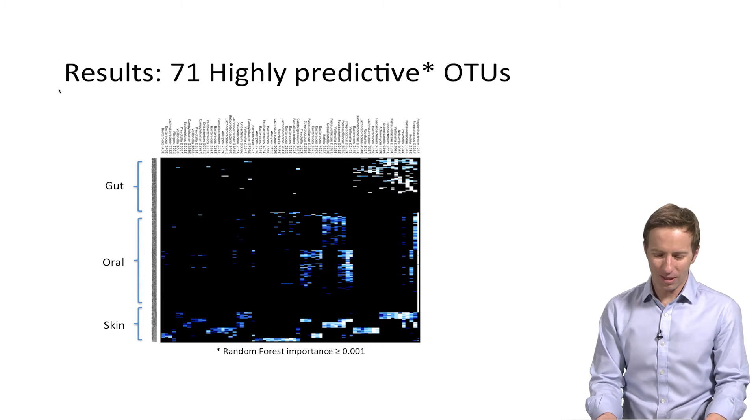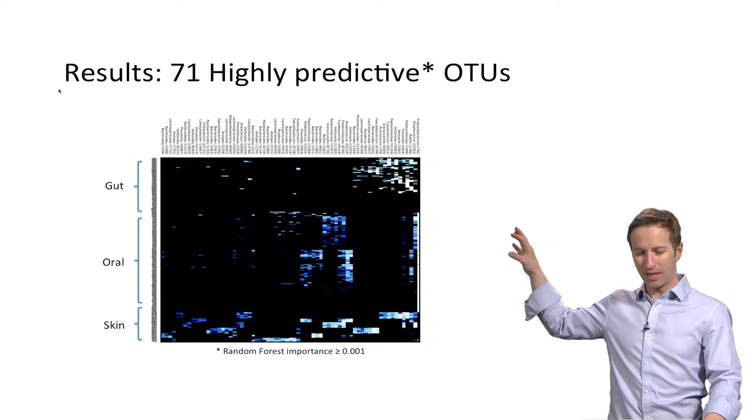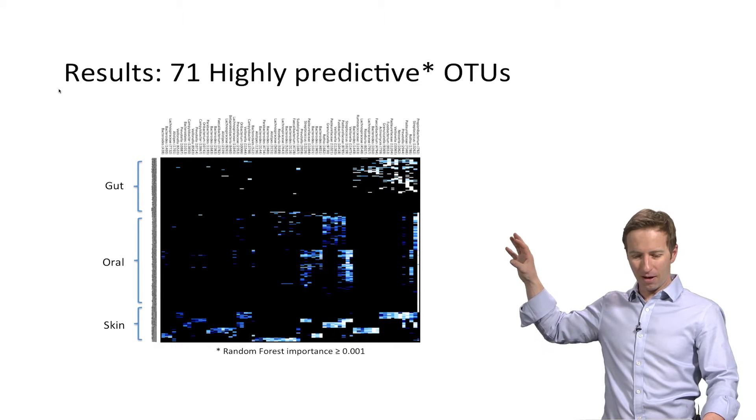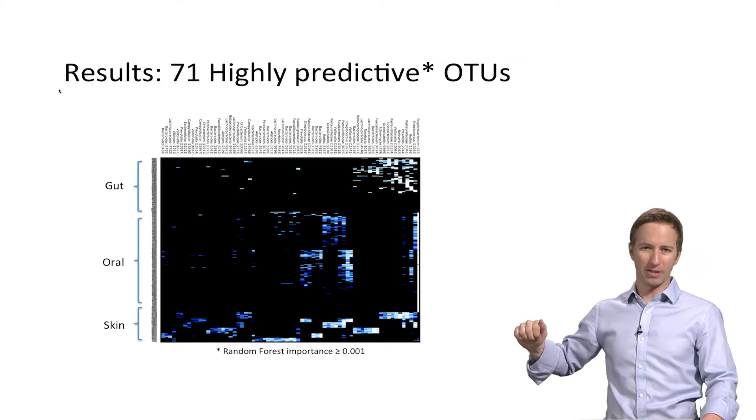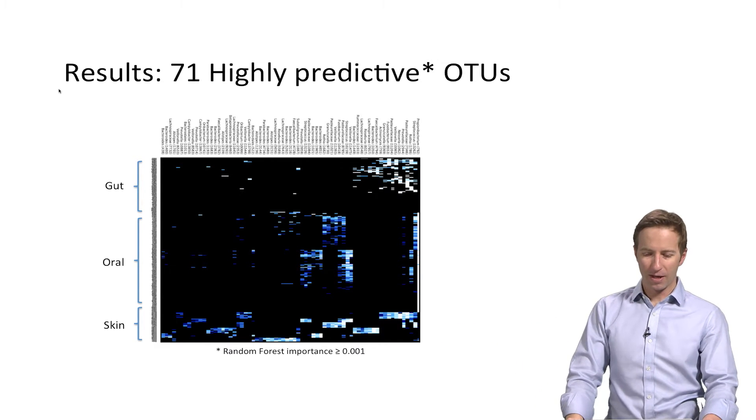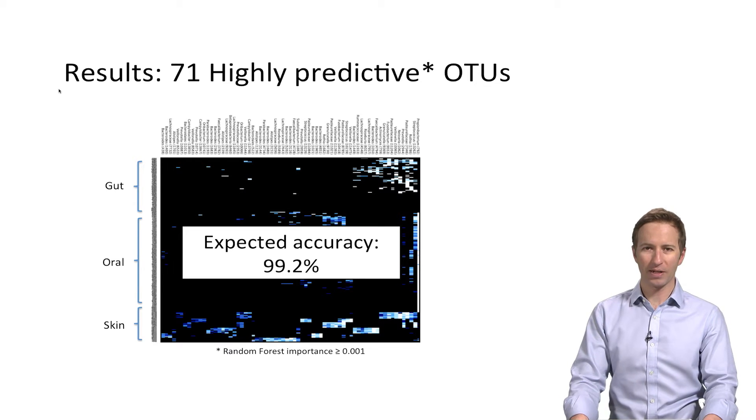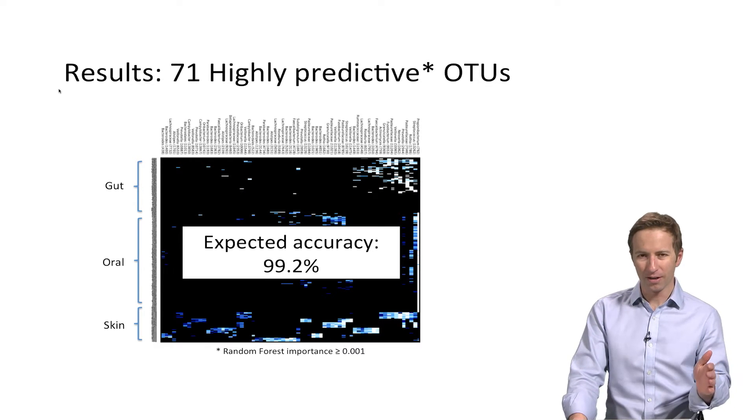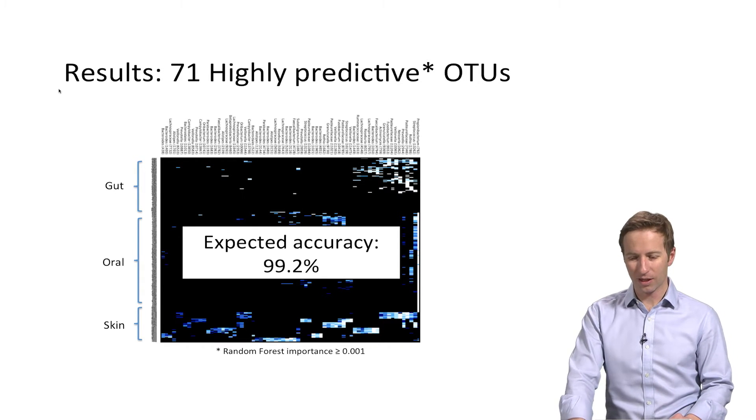And what you see is that there are some bugs that tend to be more abundant in the gut, other bugs that tend to be more abundant in the oral sites, and then a whole bunch of other bugs that tend to be more abundant in the skin. And, in fact, this classifier has an expected accuracy on future data of 99.2%. So it's a highly accurate, easy classification task.